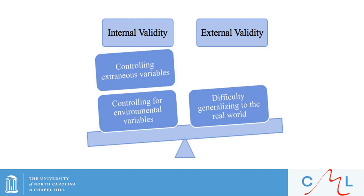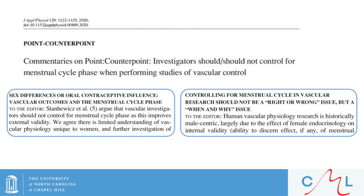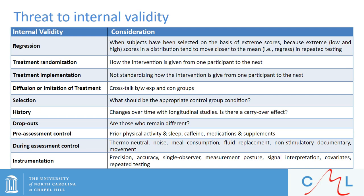Our study design and research question should determine which type of validity we prioritize most highly. As an example, the Journal of Applied Physiology recently had a point-counterpoint series on whether investigators interested in vascular physiology should control for the menstrual cycle. Myself and another PhD student contributed to this series, bringing up the issues that study design and research question should ultimately dictate how and why we should prioritize internal versus external validity. There are a number of threats to internal validity, including the following.